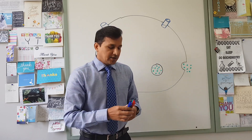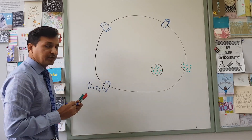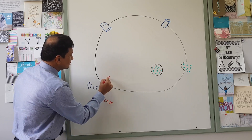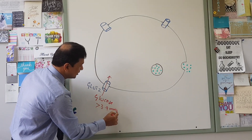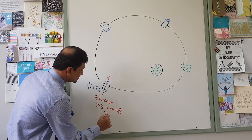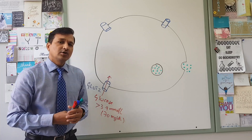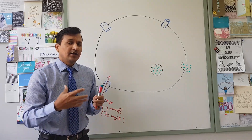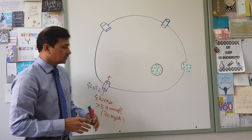Beta cells of the pancreas express glucose transporters, that is GLUT2 transporters. These GLUT2 transporters allow glucose in. Glucose gets into the beta cells whenever blood glucose level is more than 3.9 millimoles per liter, which comes to around 70 milligrams per deciliter of blood. The conversion factor from millimoles to milligrams per deciliter is 18.